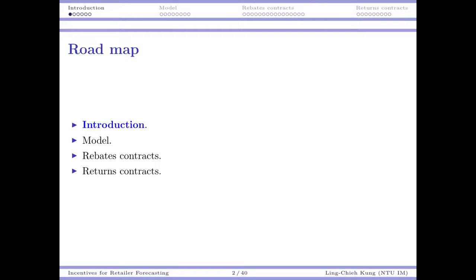In this video, I will talk about the introduction of the research question, the model setting, and in particular, how the two kinds of contracts — rebates and returns — may be used for inducing or discouraging retailer forecasting.